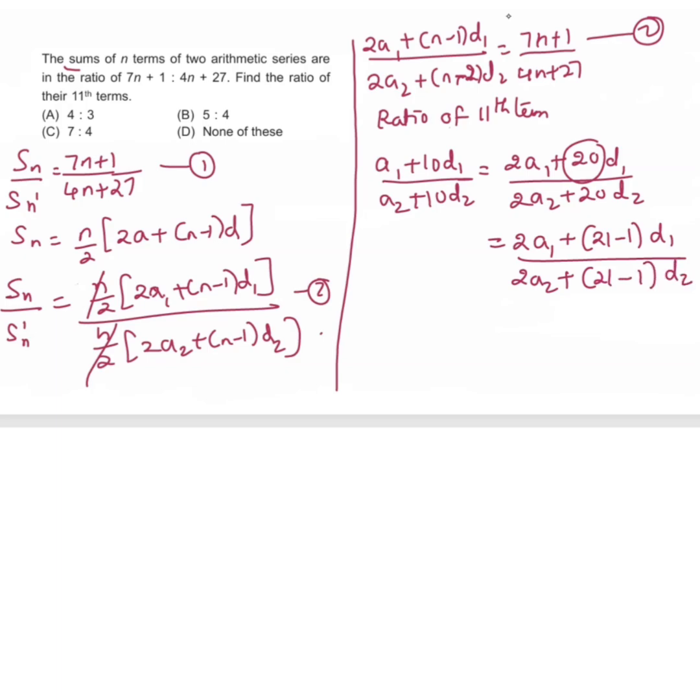Here we have in place of n, we have 21. So we will take n equals 21. If you take n equals 21 and substitute in equation 2, we get 7 into 21 plus 1 divided by 4 into 21 plus 27.